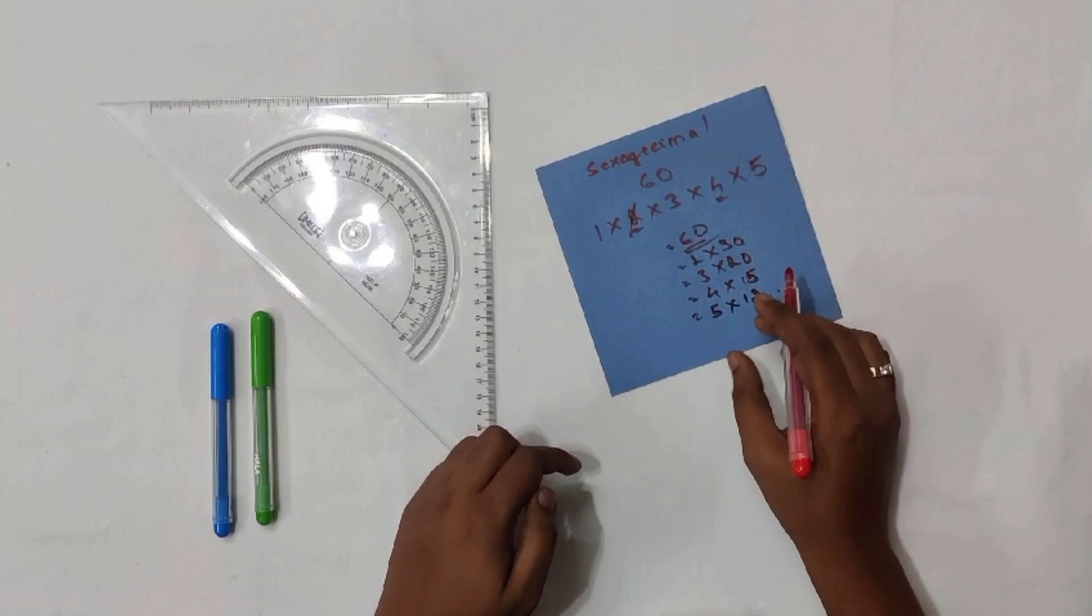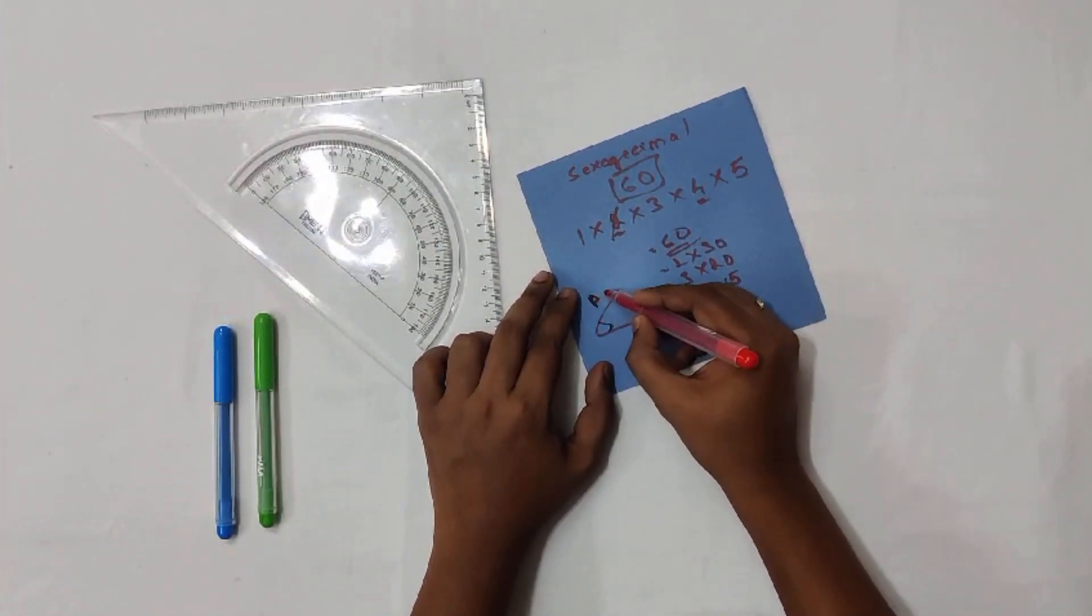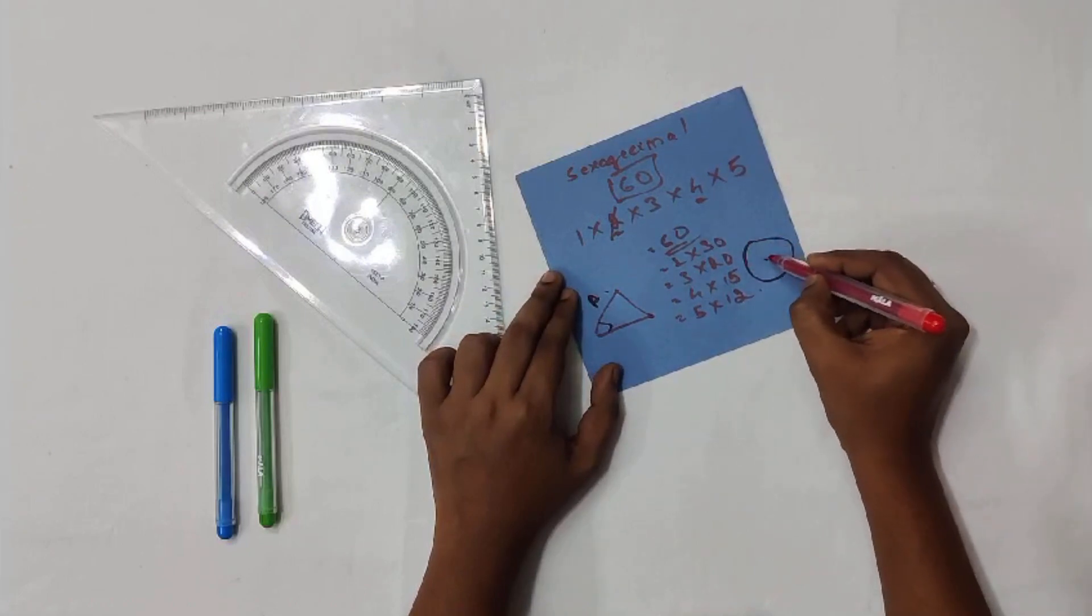Sexagesimal numbers are actively used in two things: one is angles and the other one is time.